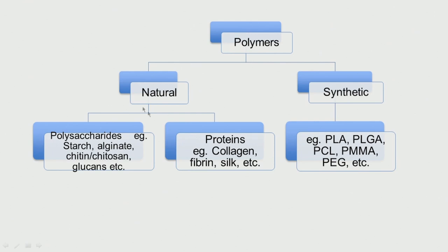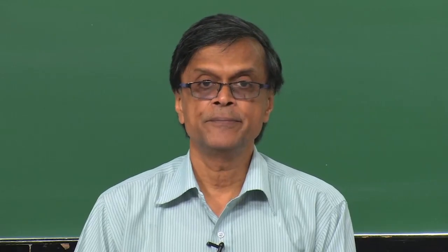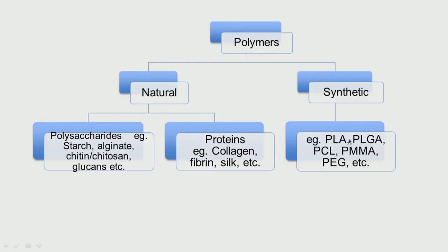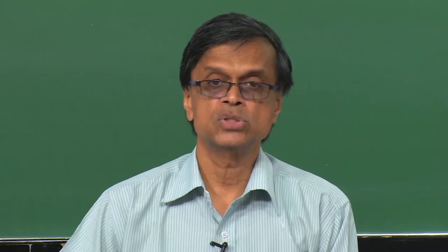So here we have 2 types: the polysaccharides and the proteins. Polysaccharides, as the name implies, contain different types of sugars in a polymeric form — it could be starch, alginate, chitosan, chitin, glucans, hyaluronic acid and so on. The other type is proteins, which have the amide bond (C double bond O, N) — it could be collagen, fibrin, silk, all those come under this category.